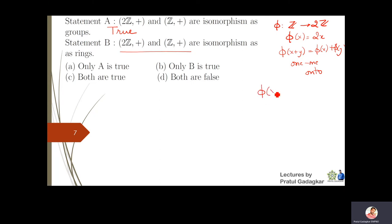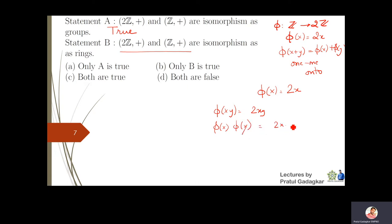Statement B: 2Z and Z are isomorphic as rings. For the same map phi(x)=2x, calculating phi(xy) gives 2xy, but phi(x)·phi(y) = 2x·2y = 4xy. These two are not equal, so phi is not a ring homomorphism, and therefore Z and 2Z are not isomorphic as rings. Statement B is false. Only statement A is true.